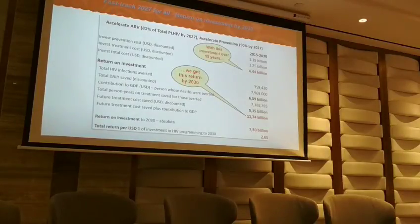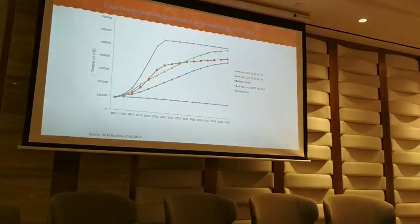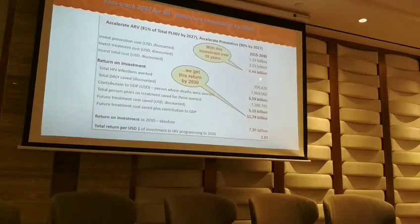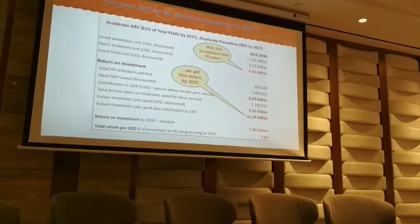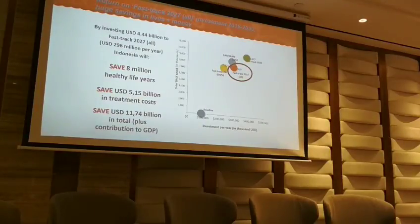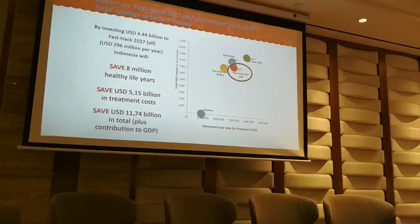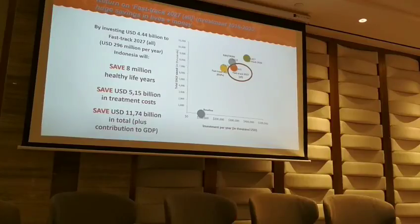If we invest 4.4 billion in prevention, we will get a return on investment of about 12 billion — so it is important to invest in prevention. By investing 4.4 billion under the fast-track scenario for all populations, we can save 8 million healthy life years, save 5 billion in treatment costs, and save 11 to 12 billion in total, plus contributions to GDP.